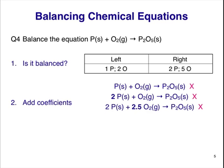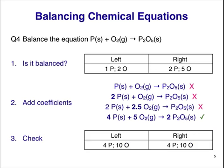But this is not how we usually like to write chemical equations. The 2.5 coefficient implies 2.5 molecules, and this isn't good chemical common sense — we can't have half a molecule. We need all the coefficients to be integers or whole numbers. The way to do this is to multiply all the coefficients, including the unwritten ones, by 2. All coefficients have doubled. This is the smallest set of coefficients in the same ratio. Now we have a properly balanced equation. Our final equation has 4 P on the left and right, and 10 O on the left and right.